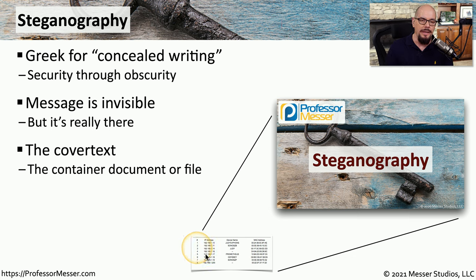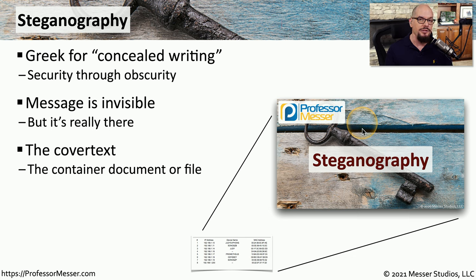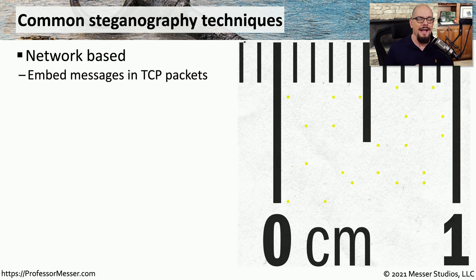If you knew how to extract that information from the file, you would be able to gather a list of IP addresses, names, and MAC addresses that are hidden from the human eye but do exist inside that image file. There are a number of open-source steganography tools you can download that are able to store information in images. You can then send that image to someone else, and they can use a similar steganography program on their side to extract the information.